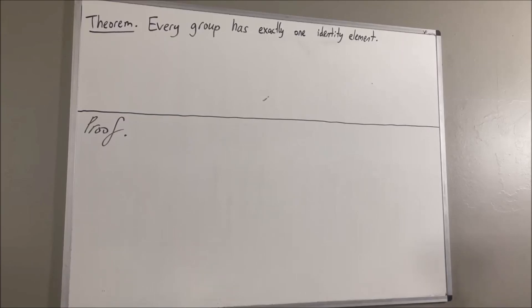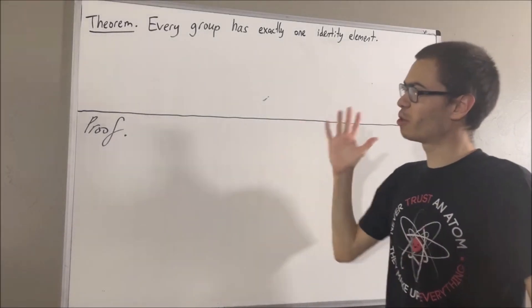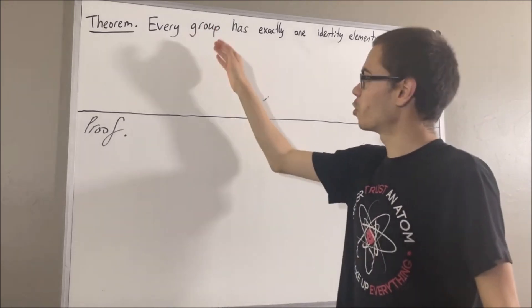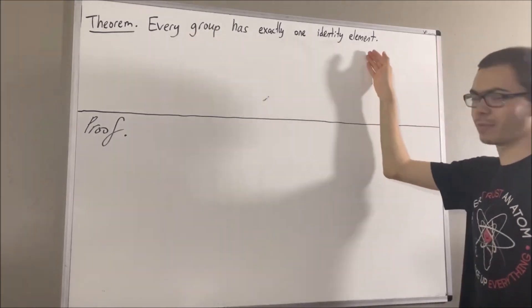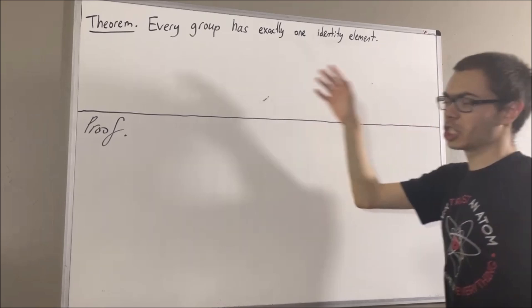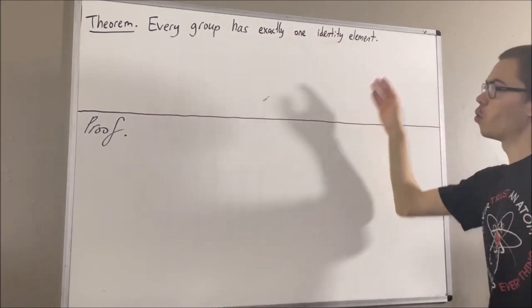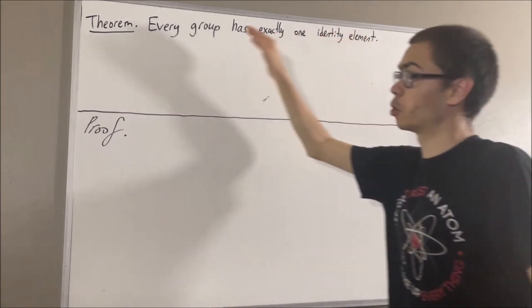Hello! In this video, we are going to prove the following theorem. Every group has exactly one identity element. Now, before we get into the proof, let's first remind ourselves what an identity element of a group is.